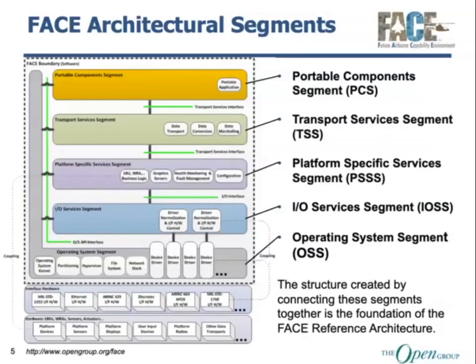This is a view of the FACE architectural segments. The FACE architectural segments form together to create the foundation of the FACE reference architecture. Looking from a top-down view, at the very top you have what's called the portable components segment. Software components residing here are considered the most portable. In the FACE technical standard, portability is not always guaranteed, but the most portable components will be in this segment. Examples include things that rely on nothing more than operating system level calls for POSIX and ARINC and moving data around.